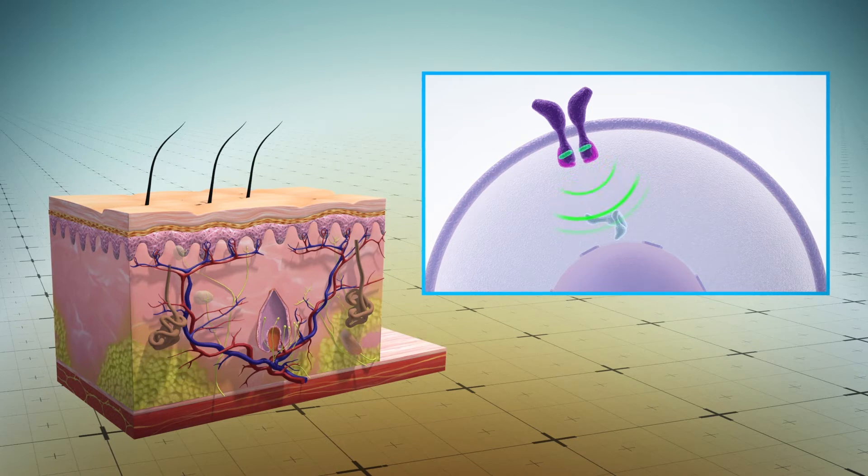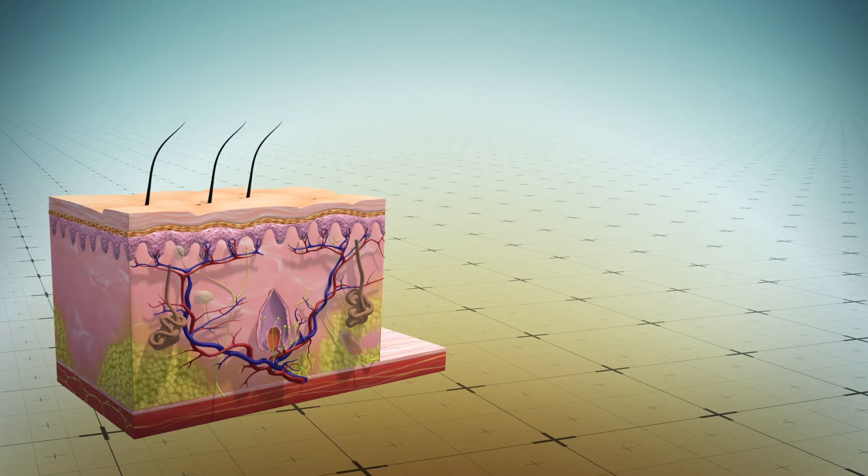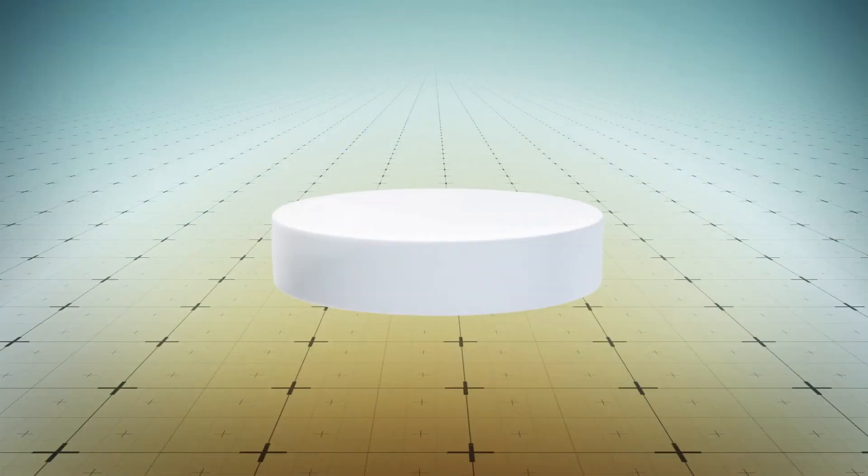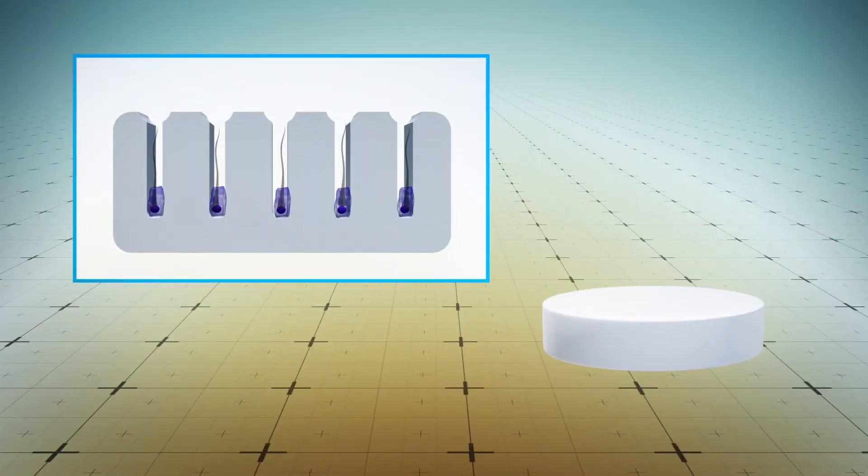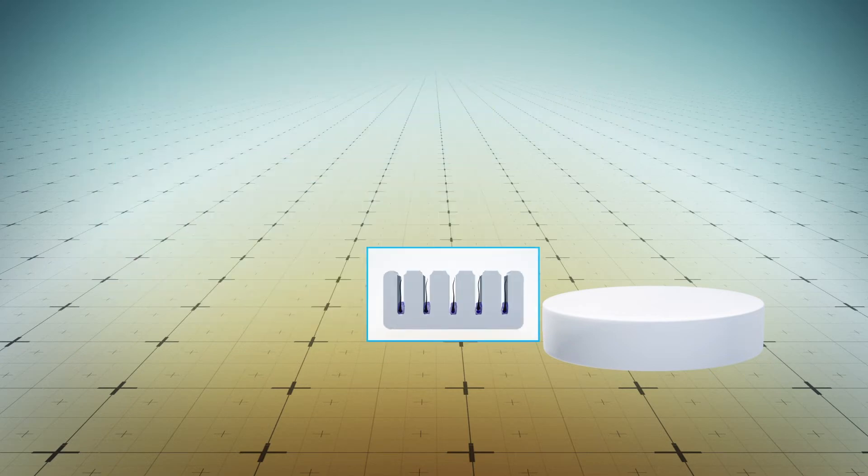By controlling pathway activity, JAK inhibitors can trigger follicle growth. According to the Columbia researchers, human hair follicles appeared after three weeks and started creating hair.